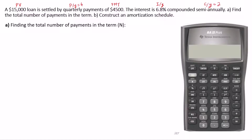As you can see, the number of years in the term, and thus the total number of payments in the term, represented by capital N, are unknown. So we need to find N first. To find N, we will use the TVM worksheet, or the time value of money worksheet.